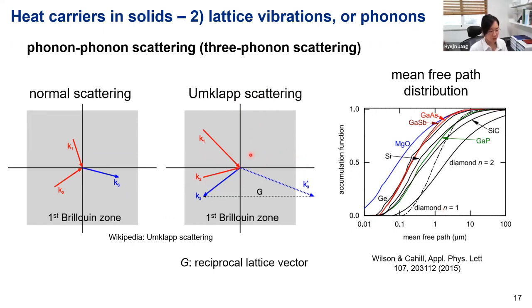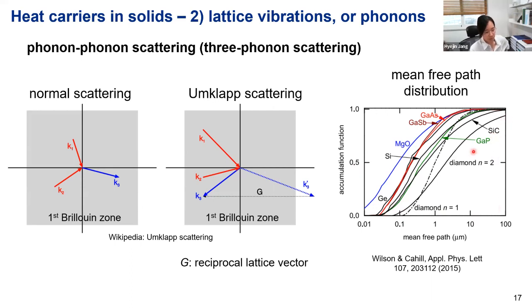Scattering events are described by the mean free path. In typical materials such as diamond, silicon, and gallium arsenide, the phonon mean free path ranges from nanometers up to about 100 micrometers — much longer than the electron mean free path in metals. This means that if you make a material smaller than this size, you introduce additional boundary scattering mechanisms which will lower the thermal conductivity — this is actually a key problem for thermal management of small materials.